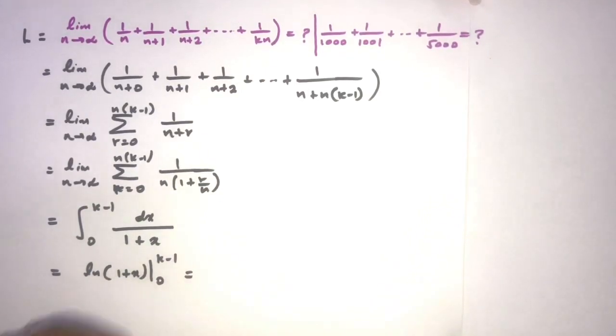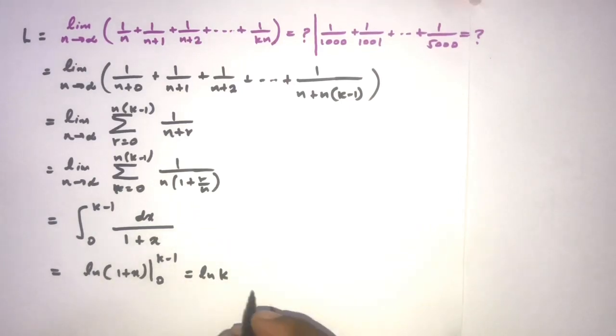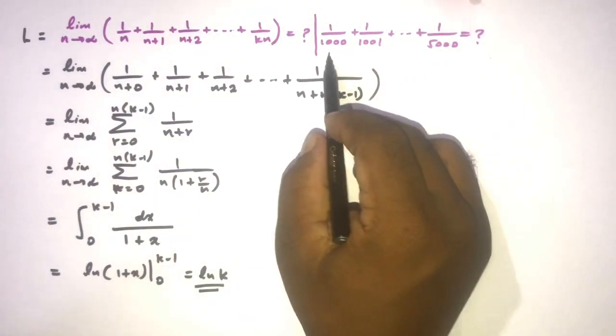Now if we apply the limit k minus 1, we know 1 minus 1 gets cancelled and we will have natural log of k. Okay, this is the answer for this limit question.